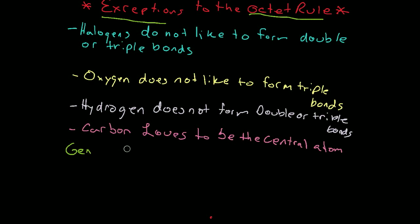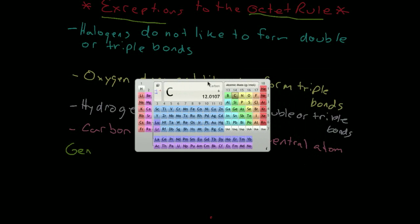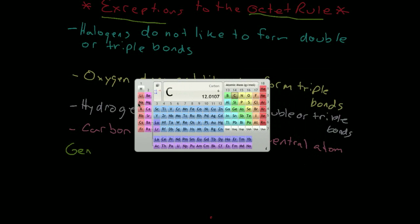Generally, if a non-metal is in the third period or greater, or third energy level or greater, if you look on a periodic table here, if it's in this level - this is the first energy shell or level or first period, second, third.